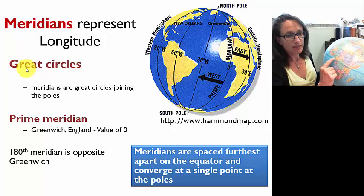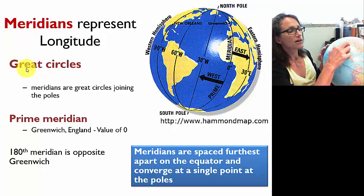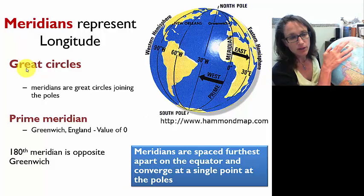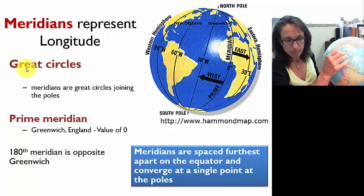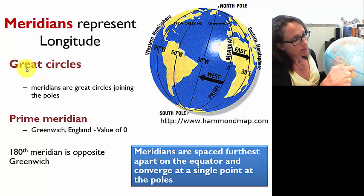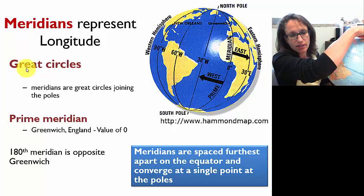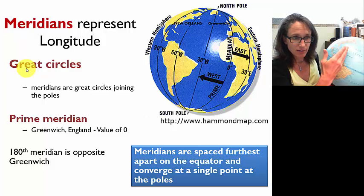180 degrees is on the opposite side of the globe. We can measure longitude to the east or to the west from the prime meridian. Here in Colorado we are west of the prime meridian, so when we express our longitude we have to designate it as west, or sometimes use a minus sign — for example, minus 108 degrees of longitude. Notice that meridians are spaced farther apart at the equator and get closer together toward the poles, so meridians are not parallel to each other, but they do cross the parallels at a right angle.